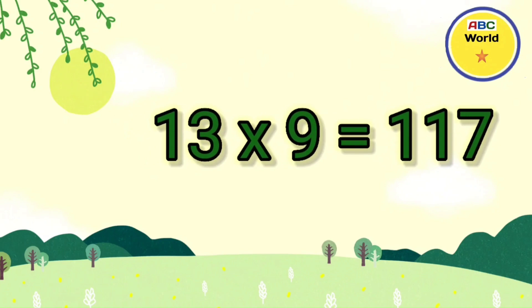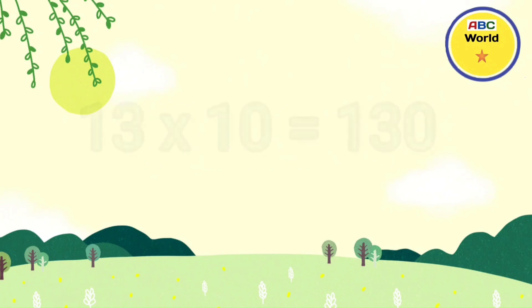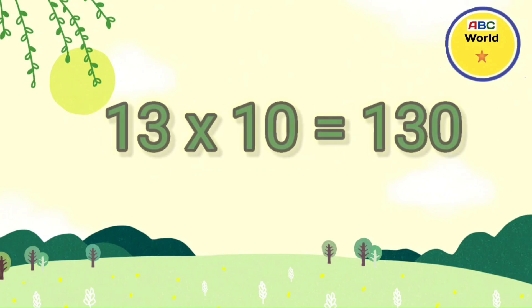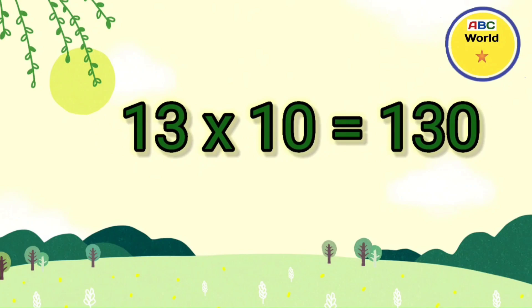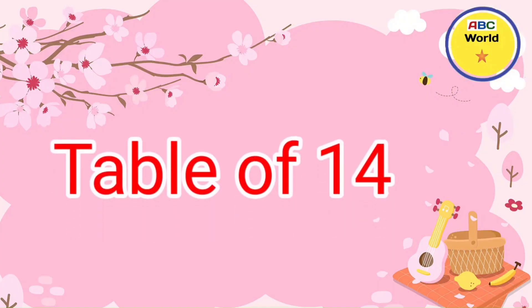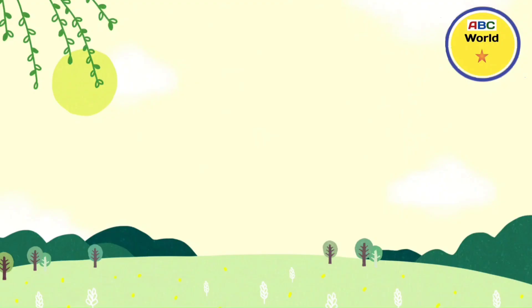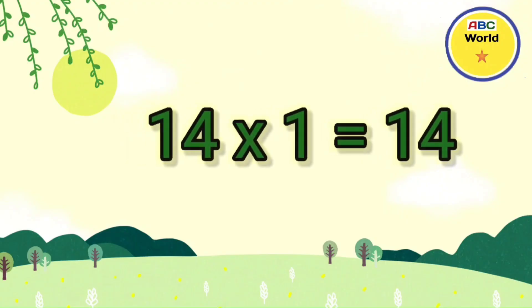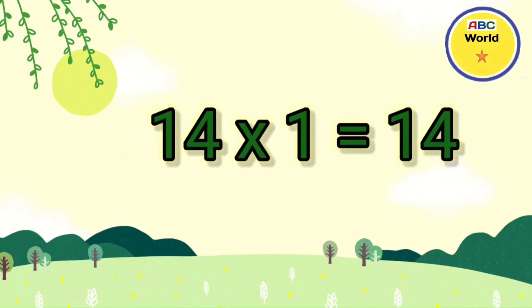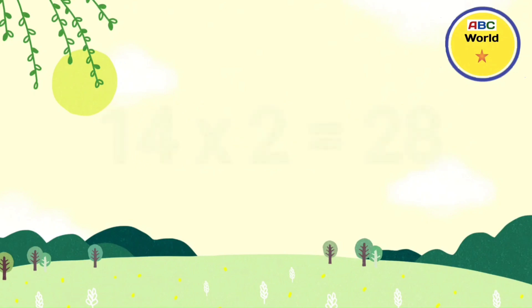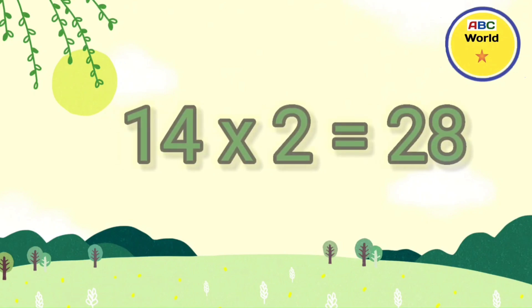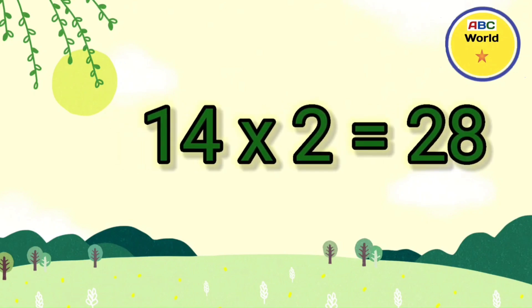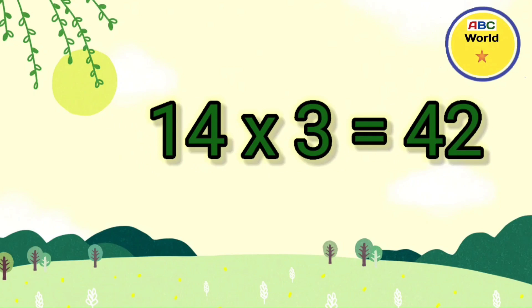13 tens are 130. Table of 14. 14 ones are 14. 14 twos are 28. 14 threes are 42.